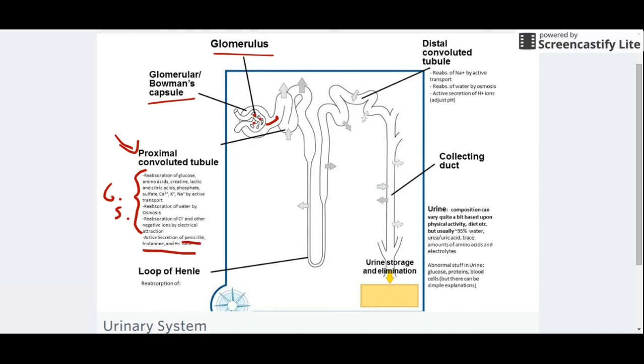Active secretion versus reabsorbing the good stuff, all of that happens in this first chunk right there called the proximal convoluted tubule.